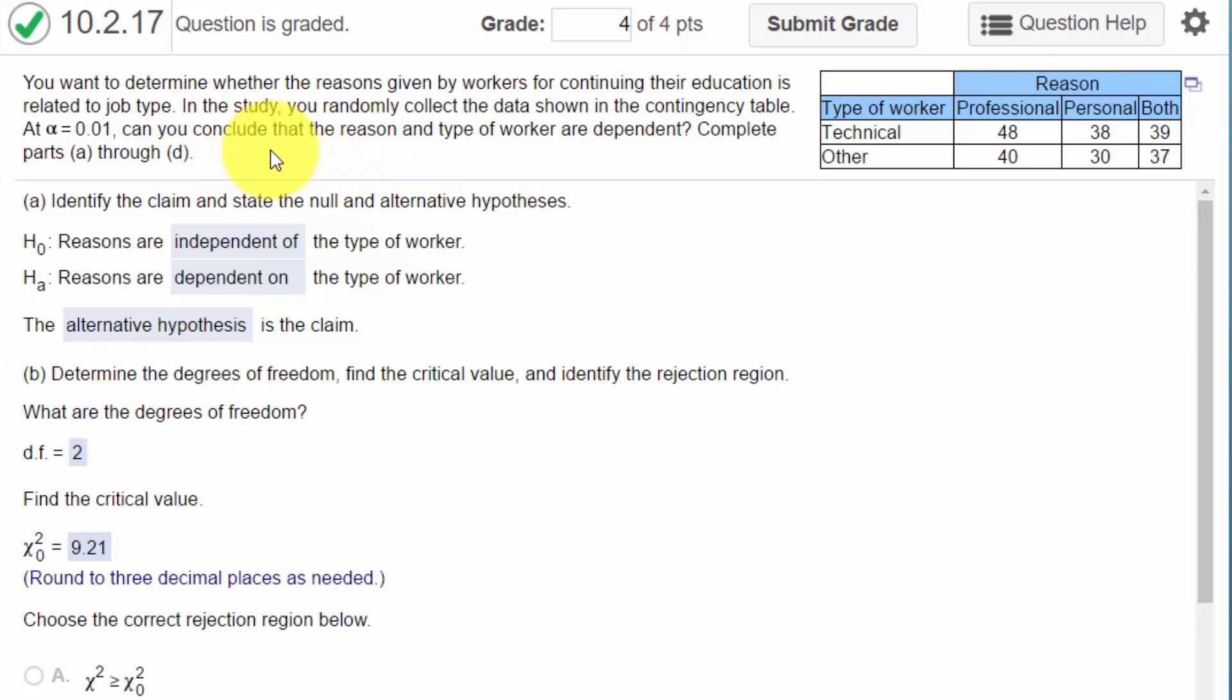The question is, can you conclude that the reason and type of worker are dependent? The question is whether or not workers give a reason for continuing education is related to their job type, and alpha is 0.01.